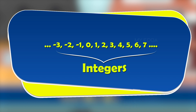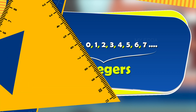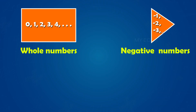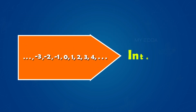So the collection of numbers from minus infinity — that is, ..., −3, −2, −1, 0, 1, 2, 3, ... to infinity — are called integers. In summary, integers are the collection of whole numbers and negative numbers.